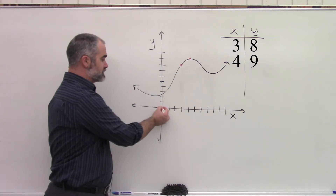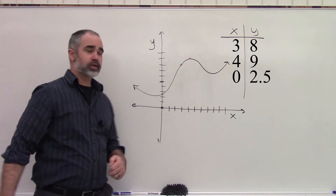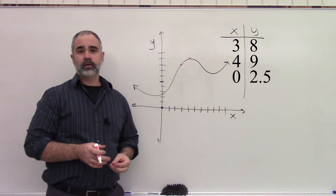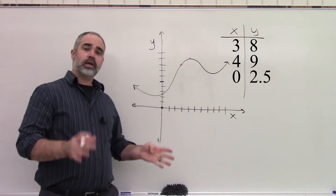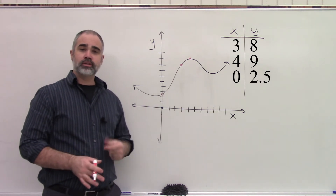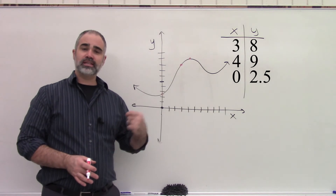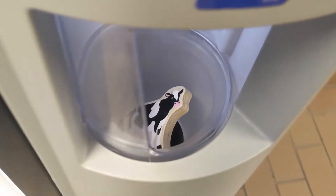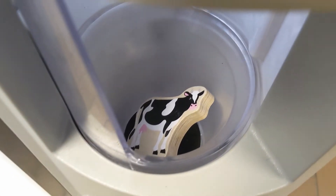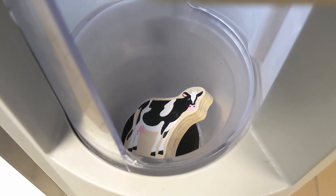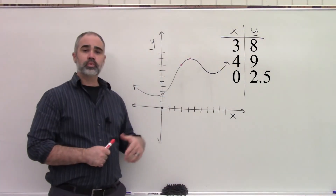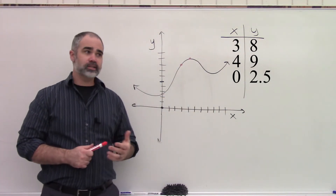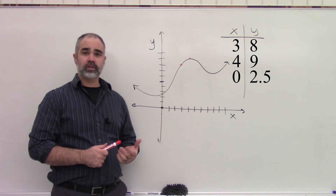No matter what the input is, there should always be the exact same output. A really easy way to test this is called the vertical line test. Since I'm plotting each of these points, it should always trace to exactly one output. So you can draw a vertical line through your graph.